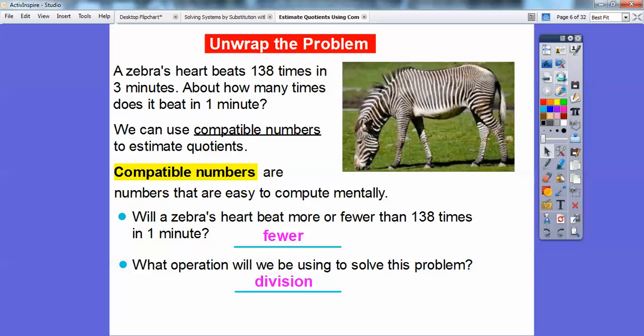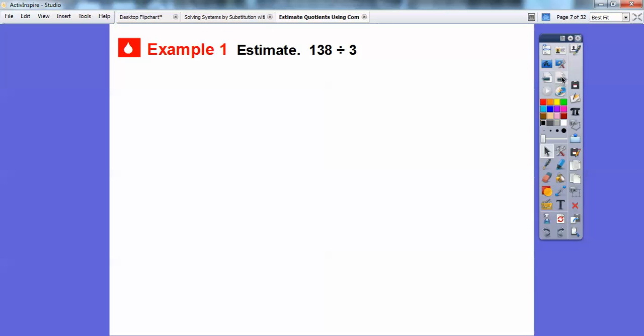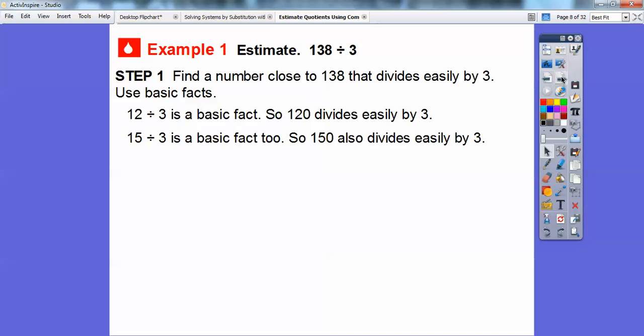We're going to estimate 138 divided by 3. Step 1 is to find numbers close to 138 that divide easily by 3 and use basic facts. So 138, I'm going to just focus on the tens digits right here. This 13, this is 13 tens. 138, this 13 right here is 13 tens.